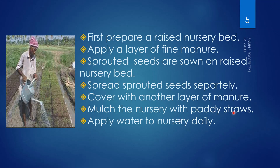Mulch the nursery with paddy straws to protect from birds, since the seeds are above the soil. Do this for only one night or two days. Apply water to the nursery daily using rose cans or less irrigation.